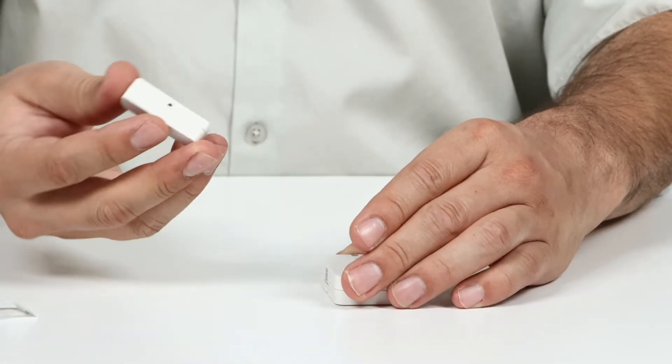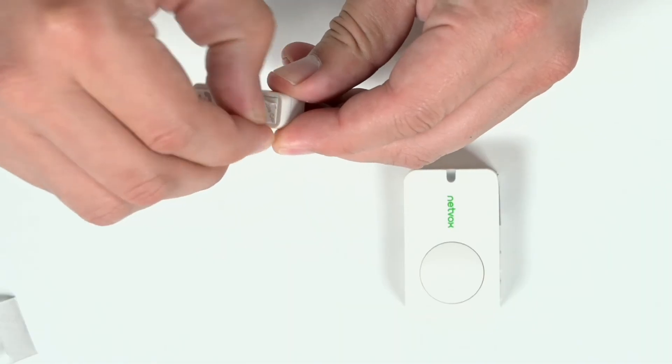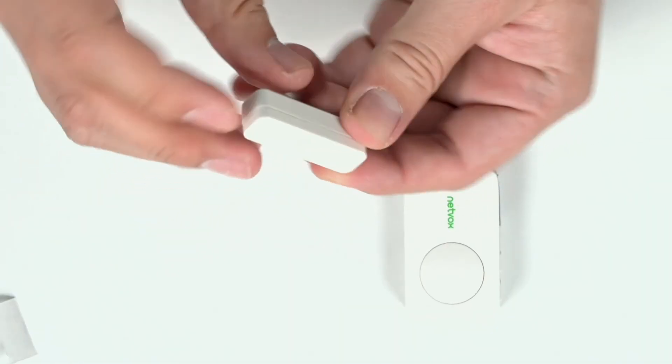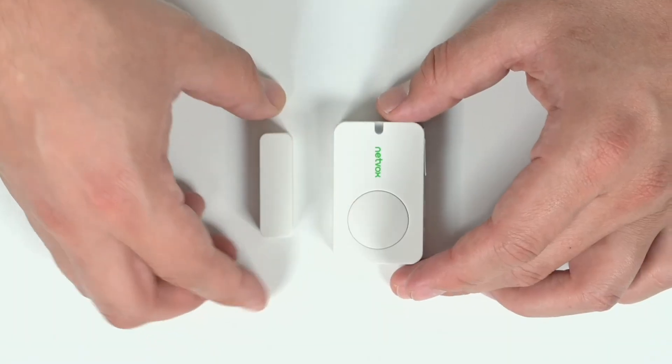To mount the device, first peel the double-sided tape on both the sensor and the magnet. Your magnet and your sensor should be at least two centimeters apart.